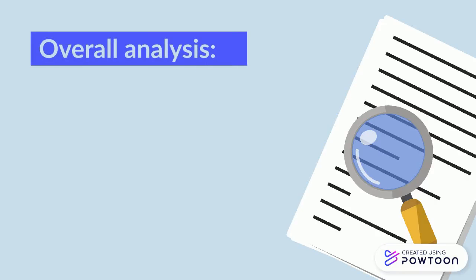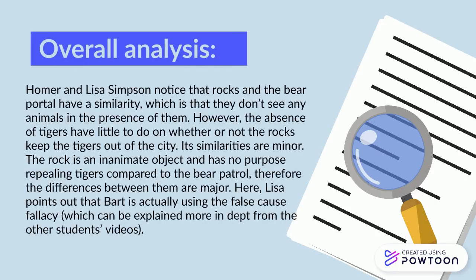The overall analysis is: Homer and Lisa Simpson noticed that rocks and the bear patrol have a similarity, which is that they don't see any animals in the presence of the rock and the bear patrol. However, the absence of tigers has little to do with whether or not the rocks keep the tigers out of the city. Its similarities are minor. The rock is an inanimate object and has no purpose repelling tigers compared to the bear patrol. Therefore, the differences between them are major.